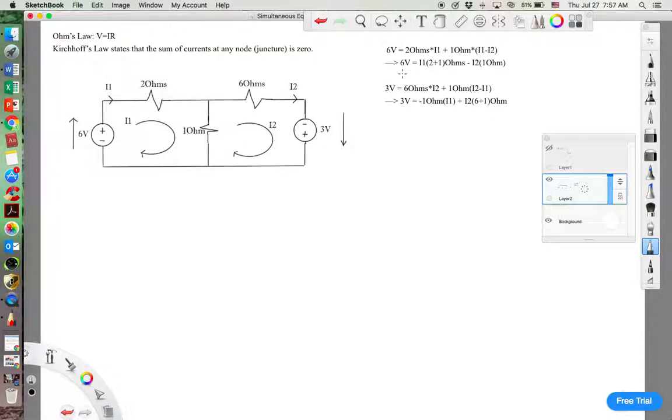And so we simplify 6 volts equals I1 times 2 plus 1 ohms minus I2 times 1 ohm. And then in this loop, we've got 3 volts. Our current is going this way. And so 3 volts equals 6 ohms times I2.